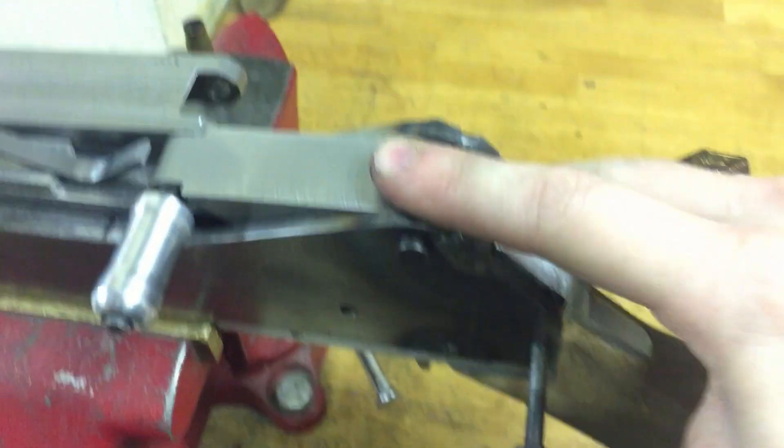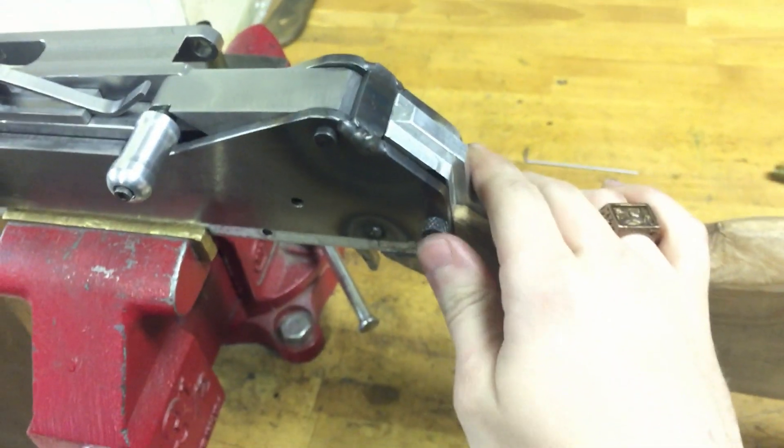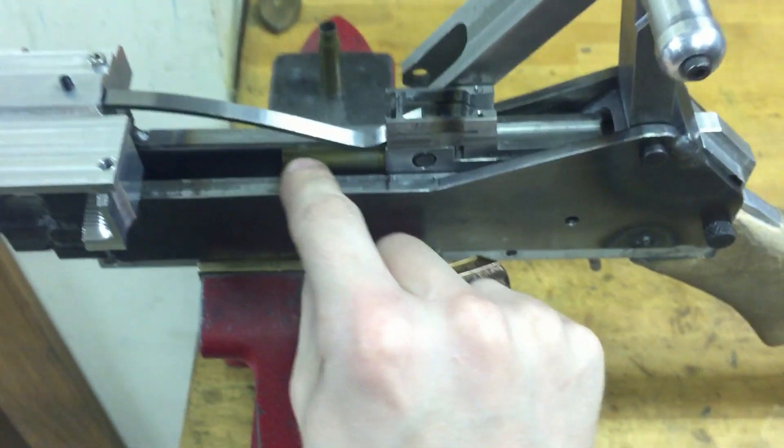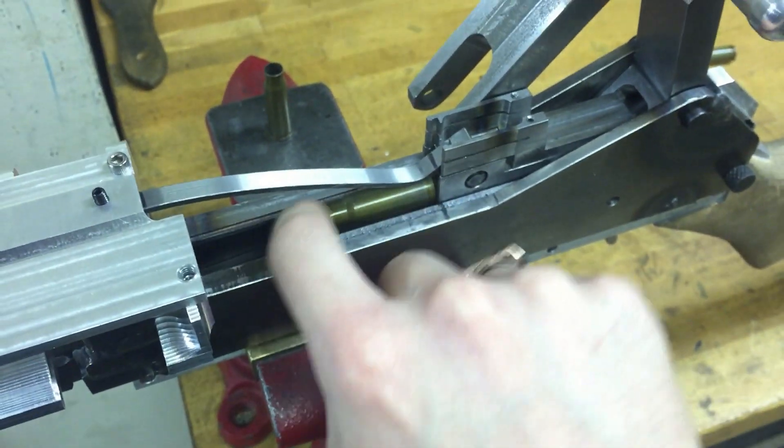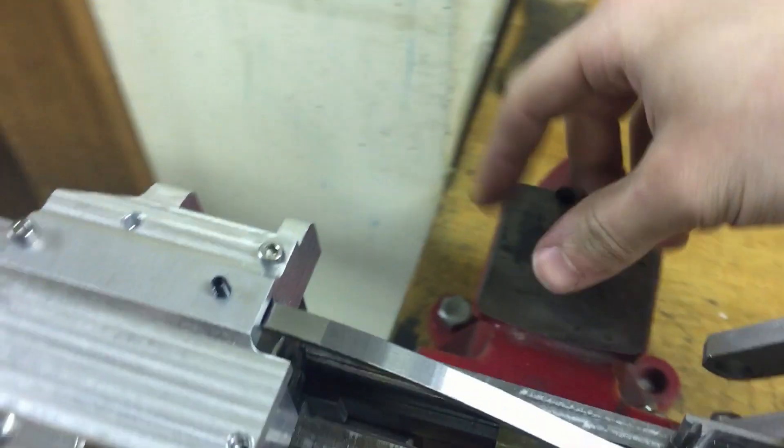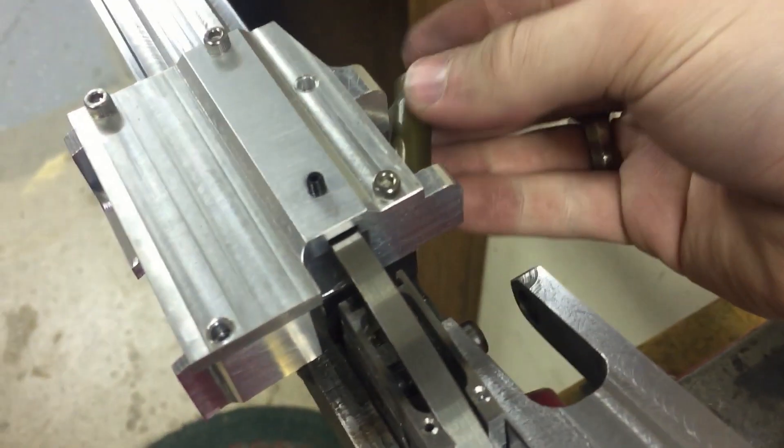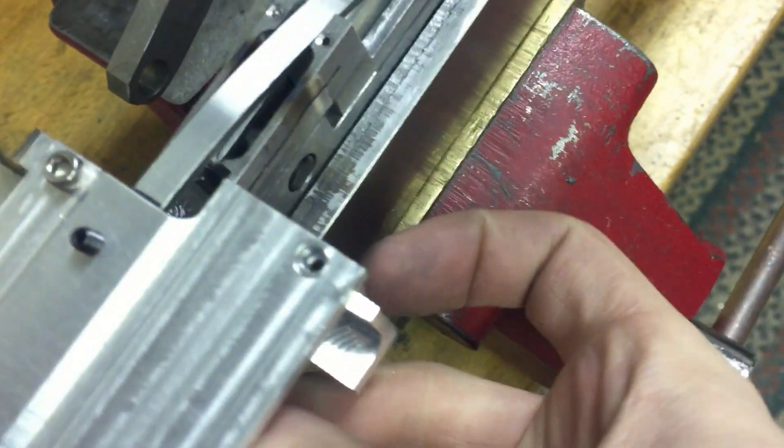Put this takedown pin back in. So with that pin back in, now it'll stay put. You see I have an empty case right in here. A belt would feed up into here. So what I'm going to do is try to simulate best I can how this would feed.